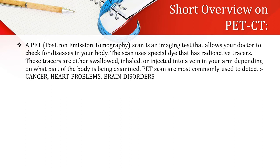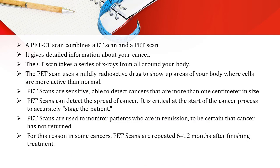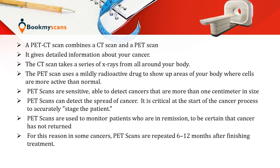Let us have a short overview of the PET CT scan. A PET — positron emission tomography — scan is an imaging test that allows your doctors to check for disease in your body. The scan uses a special dye that has radioactive tracers, which are either swallowed, inhaled, or injected into a vein in your arm depending on what part of the body is being examined. PET scans are most commonly used to detect cancer, heart problems, and brain disorders. A PET CT scan combines a CT scan and a PET scan, giving detailed information about your cancer. The CT scan takes a series of X-rays from all around your body, while the PET scan uses a mildly radioactive drug to show areas where cells are more active than normal. PET scans are sensitive and can detect cancers that are more than one centimeter in size.